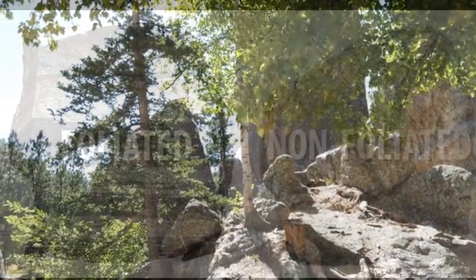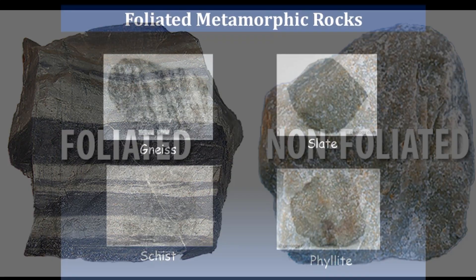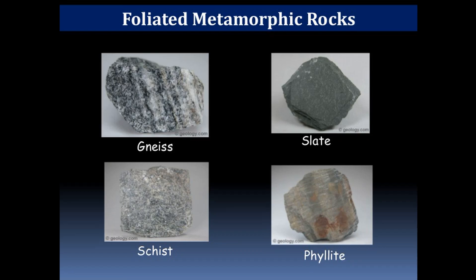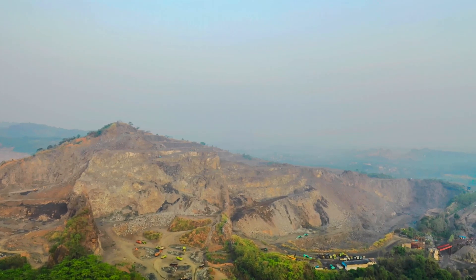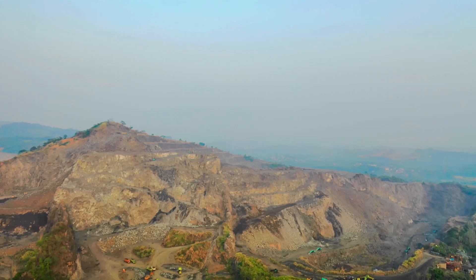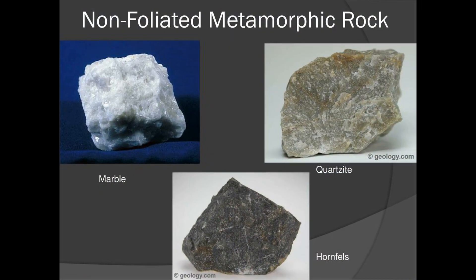Metamorphic rocks can be classified into foliated and non-foliated types. The foliated metamorphic rocks — such as gneiss, phyllite, schist, and slate — have a layered or banded appearance produced by exposure to heat and directed pressure. Non-foliated metamorphic rocks, such as hornfels, marble, quartzite, and novaculite, do not have a layered or banded appearance.